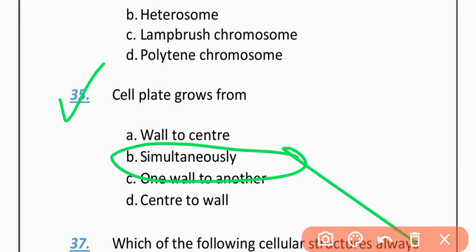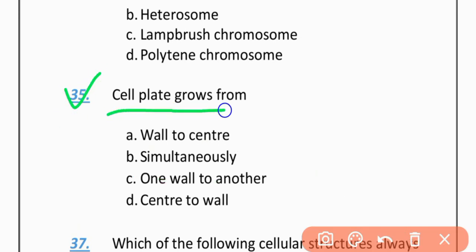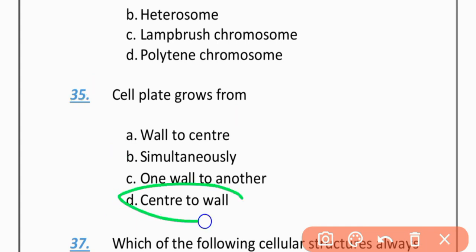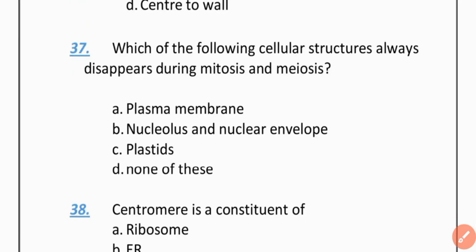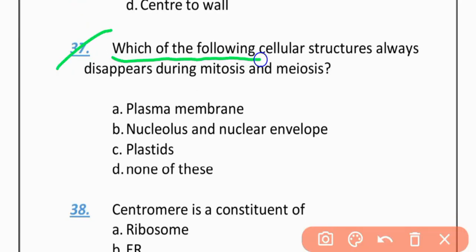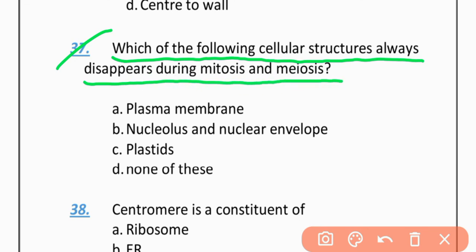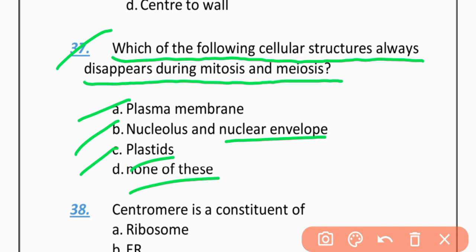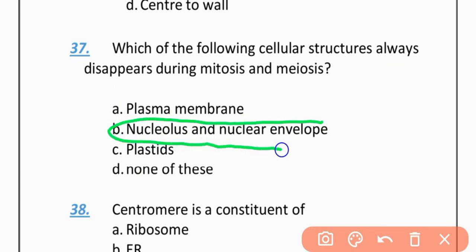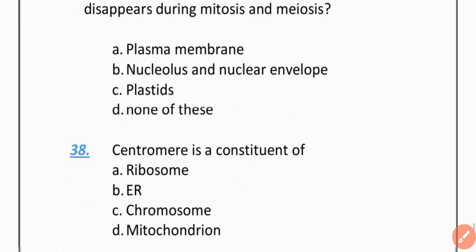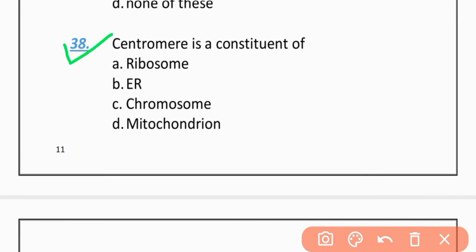MCQ 37: Cell plate grows from — wall to center, simultaneously, one wall to another, or center to wall. The correct option is D — center to wall. MCQ 37: Which of the following cellular structures always disappears during mitosis and meiosis? Options: Plasma membrane, Nucleolus and nuclear membrane, Plastid. The correct option is B — Nucleolus and nuclear envelope. MCQ 38 involves centromere.